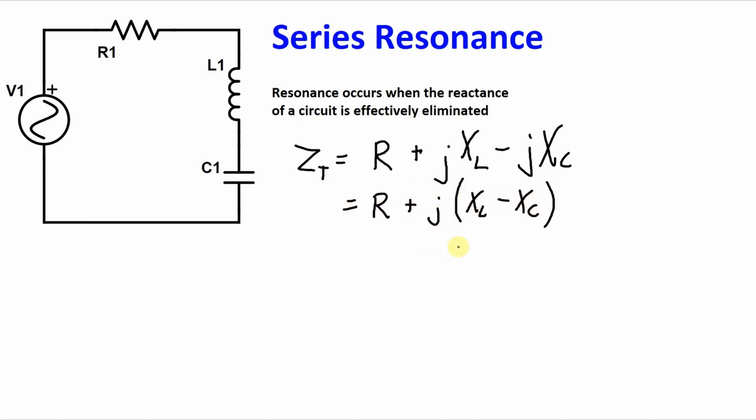So if XL equals XC, that imaginary part, that reactive part of the circuit goes away. Let's take a look at when this will be true.